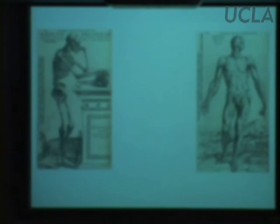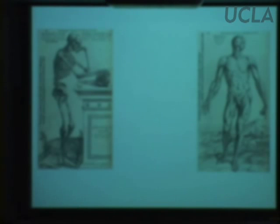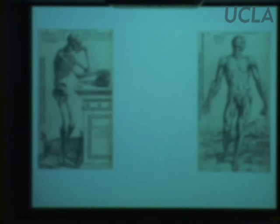Vesalius said there are some things that aren't right in Galen's text, and people got furious at him, including a guy by the name of Jacobus Silvius — remember the Fissure of Silvius? He declared Vesalius a madman and said that if there's anything different between what you're seeing and what Galen wrote, it's because bodies must have changed since Galen wrote his text. People love their mentors and their texts, but it turns out Galen did make some mistakes.